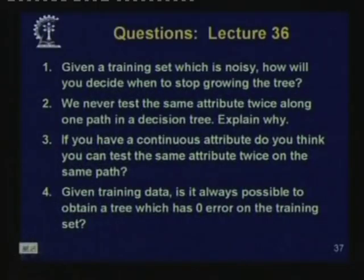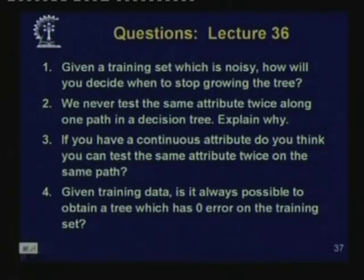We stop with some questions. Question 1: Given a training set which is noisy, how will you decide when to stop growing the tree? Question 2: We never test the same attribute twice along one path in a decision tree — explain why. Question 3: If you have a continuous attribute, do you think you can test the same attribute twice on the same path? Question 4: Given training data, is it always possible to obtain a tree which has zero error on the training set? Thank you.